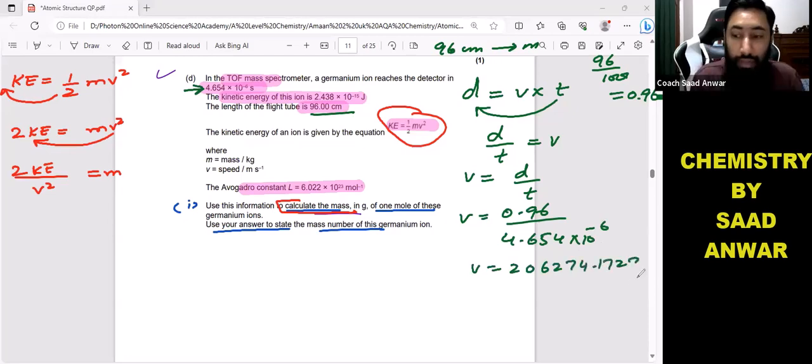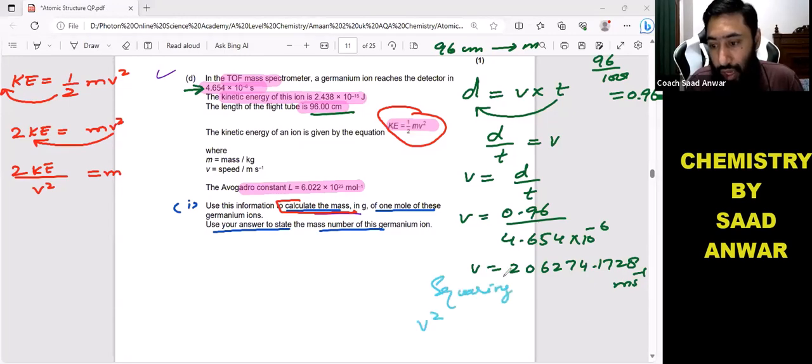But in the formula you can see we need v squared, so I will take its square. Squaring on both sides, when I take the square, the square of this answer will be 4.25 times 10 raised to power 10 meters per second squared. This is the value which I can use here.